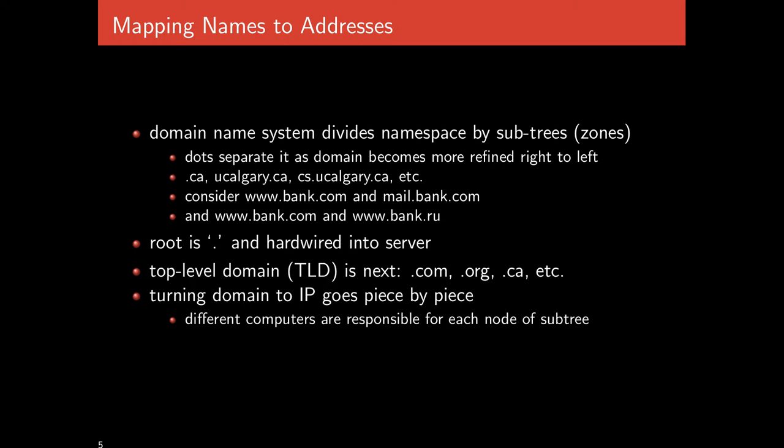The domain name system — which translates hostnames into domain names — divides the namespace into subtrees, or zones. When we look at a hostname like www.cs.ucalgary.ca, each dot separates these subtrees. These dots become more refined as you move right to left. Unlike IPs, which are read left to right, domain names are read right to left.